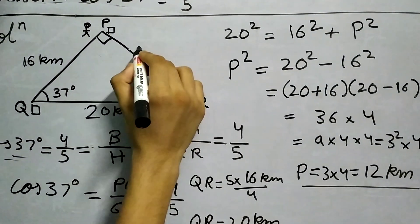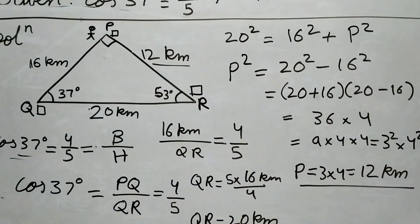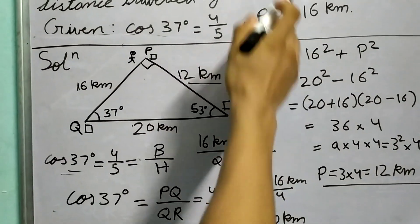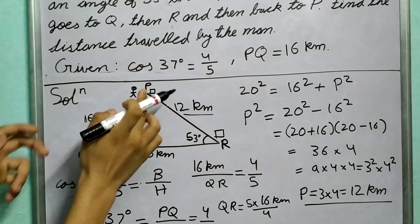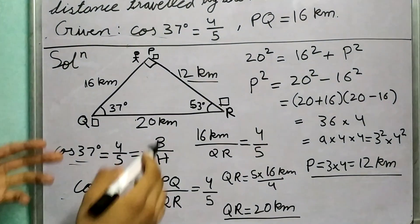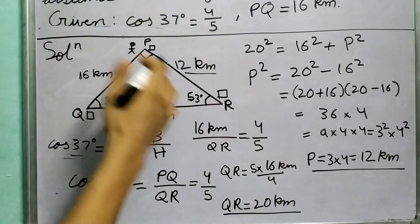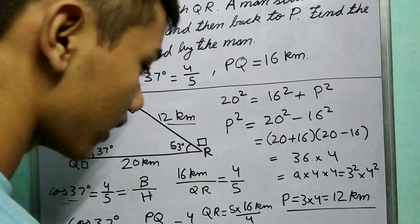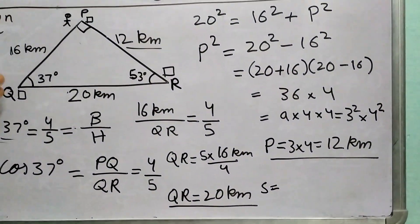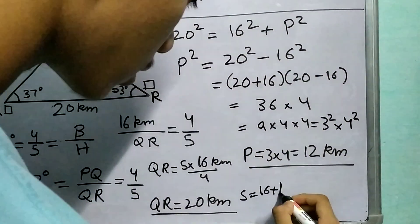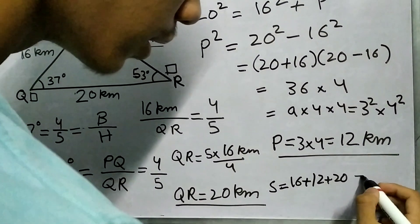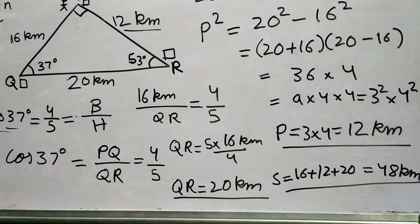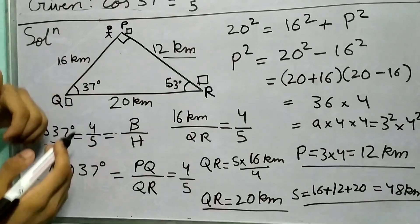We know PQ, QR, and PR. We need to find the perimeter because the man starts from P, goes to Q, then R, and then back to P, covering the perimeter of this triangle. The distance will be 16 + 12 + 20, which equals 48 km.